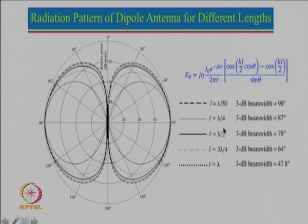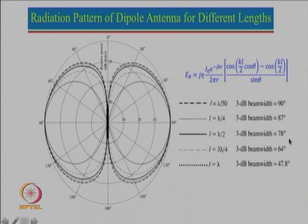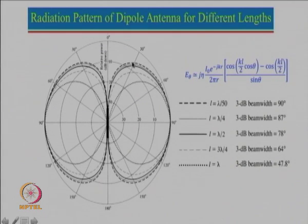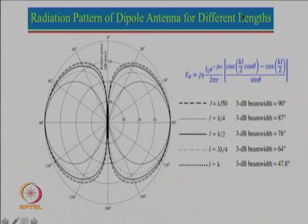As the dipole length increases, the pattern is slightly narrower, meaning gain is increasing. For λ/2, the half-power beam width is 78°, and for length equal to λ the half-power beam width is about 47.8° — a much narrower beam. Increasing the length narrows the beam and increases the gain, which is directly proportional to the aperture. So as length increases, gain increases and half-power beam width reduces correspondingly.